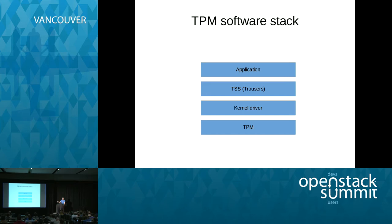The hardware may hide the TPM if it's not enabled in firmware. Systems often ship with TPMs disabled by default, so if you want to deploy to a large number of systems with the TPM enabled, you'll need to figure out how to turn those on. The kernel driver will typically autoload, Trousers will automatically start if there's a TPM present, and then it's just a matter of writing your applications.